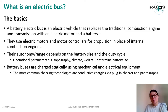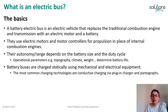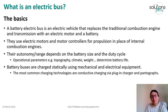An electric bus is different from a conventional bus in two main elements. The first one is they don't have an internal combustion engine and they don't have a fuel tank. These elements have been replaced by an electrical motor and a battery, and what electric buses do is that they use electric motors and motor controllers for propulsion instead of the internal combustion engine. Another main difference is the range, the autonomy. This depends heavily on the battery size you have on board and the duty cycle.